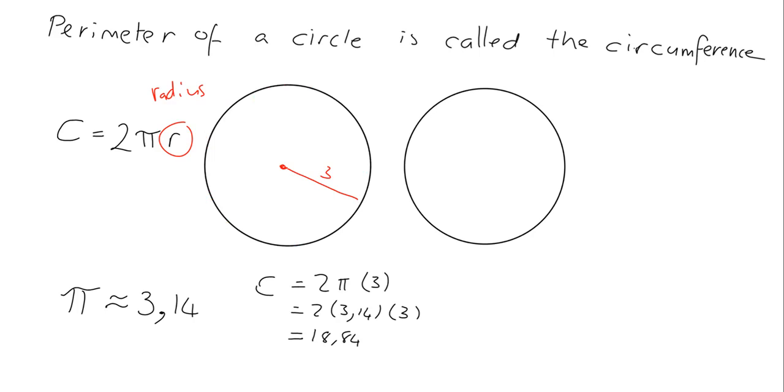The only other thing that we need to know is that sometimes instead of giving us the radius, they will give us the diameter of the circle. So they might tell us the diameter, say for example is 10 centimeters. Now what is the diameter of the circle? Well, that's the thing that goes all the way across the circle going through the center.